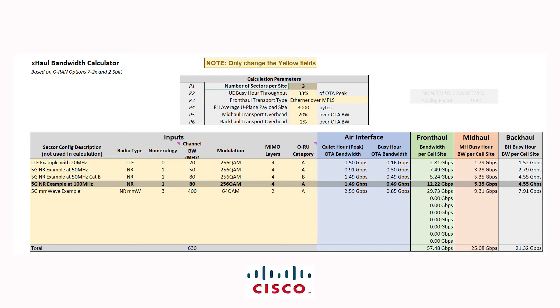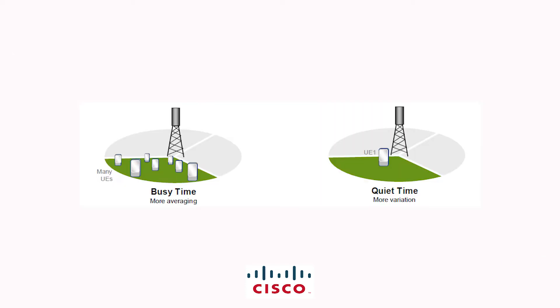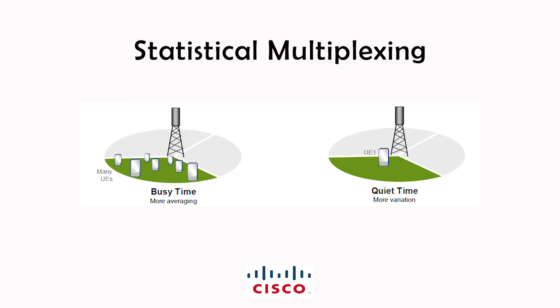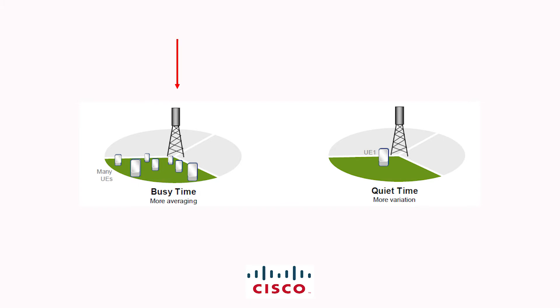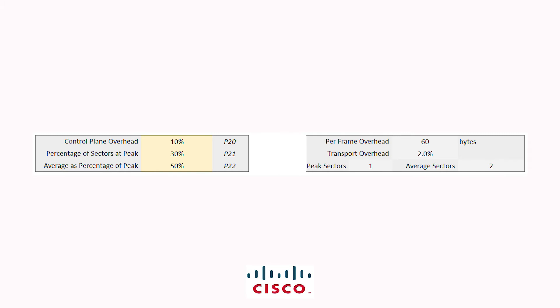You can see the resultant per-radio fronthaul bandwidth for three sectors is coming to 12.22 Gbps. This particular number can be justified with a simple concept of statistical multiplexing, where you don't really have peak traffic at a cell site all the time. There will be busy hours where multiple users will be connected to a cell site and receiving an average data rate on their user equipment, and then there will be quiet hours where a single user might be connected and receiving peak data rate on their mobile device. To account for this, we are operating with two-average and one-peak data rate assumptions across the three sectors deployed at this cell site.